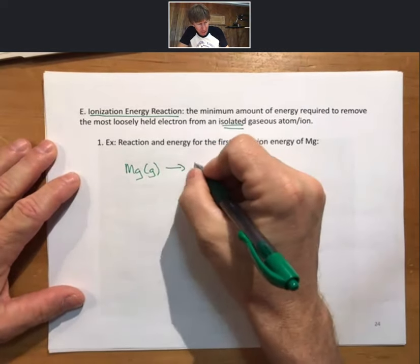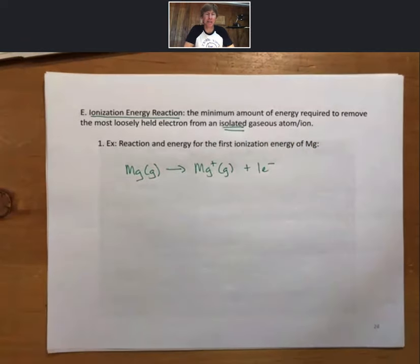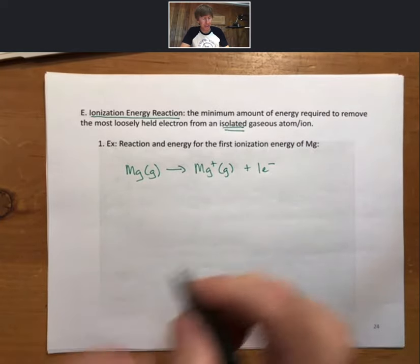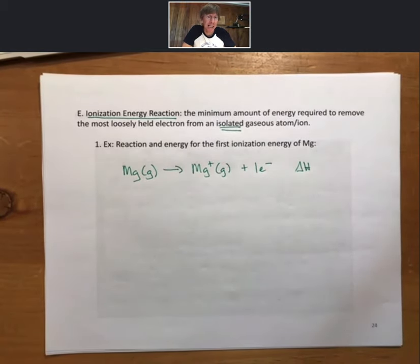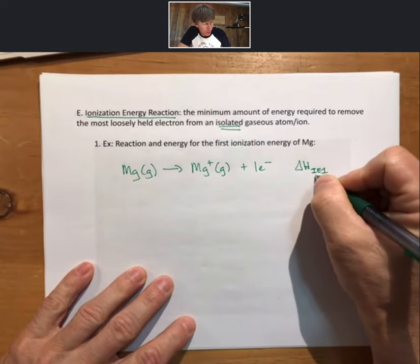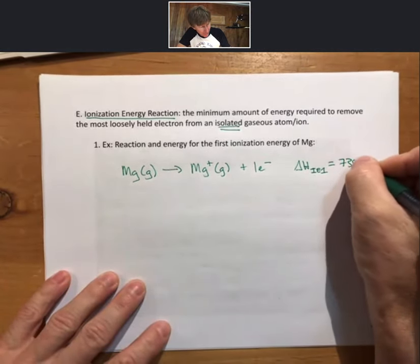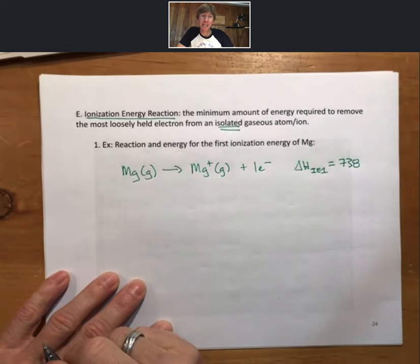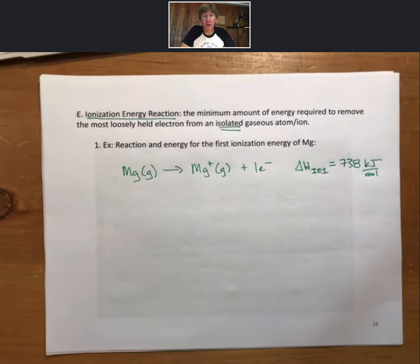Magnesium gas loses one electron to become magnesium plus gas, and that one electron is a product. Now, this is a reaction. It has a delta H of reaction. And I'm going to call this delta H IE1 for ionization energy one. The ionization energy, or the delta H, the energy associated with this reaction, 738 kilojoules per mole. That is an endothermic process. That means to remove an electron from magnesium, and most things, including metals and other phases, requires energy. This is endothermic.